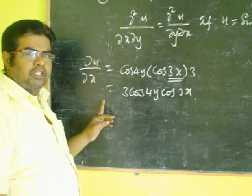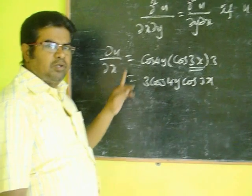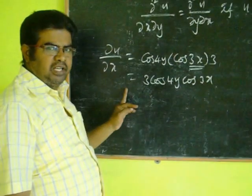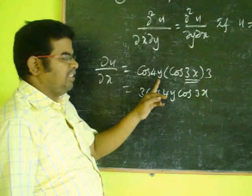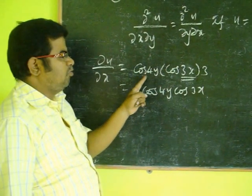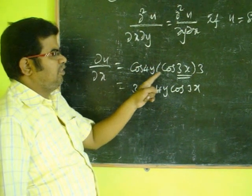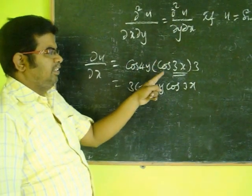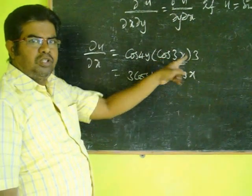∂u/∂x means derivative of the function u with respect to x partially. Therefore, we treat y as a constant. Therefore, cos(4y) is a constant. Then we differentiate only sin(3x), which gives cos(3x)·3.